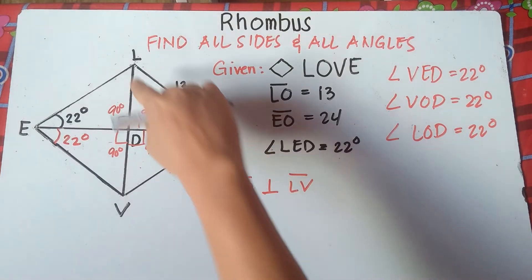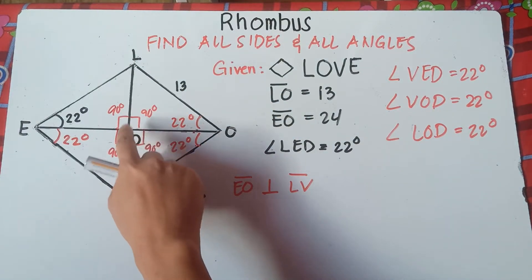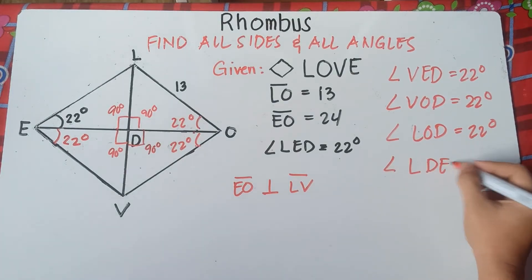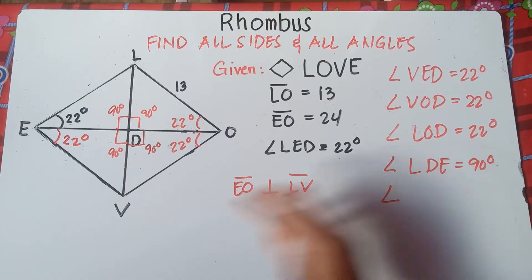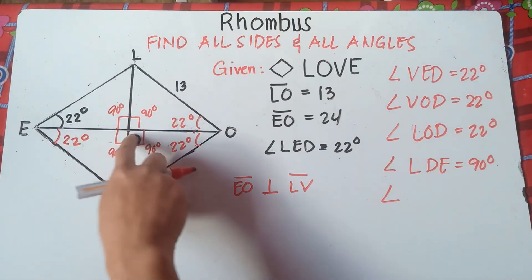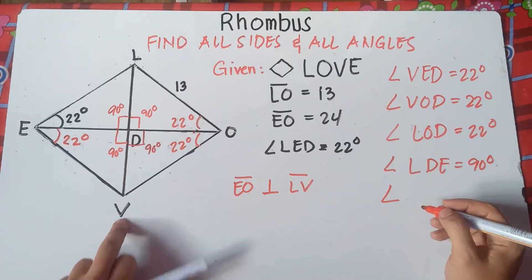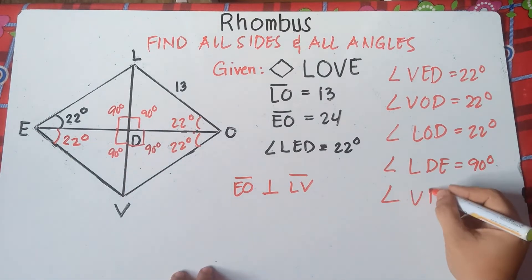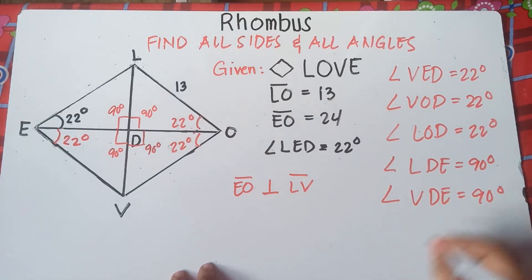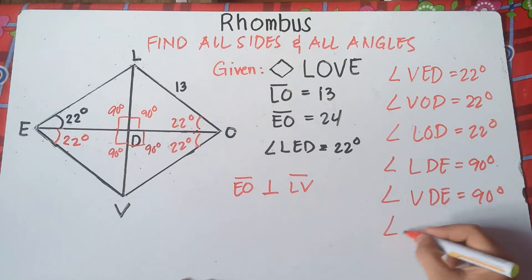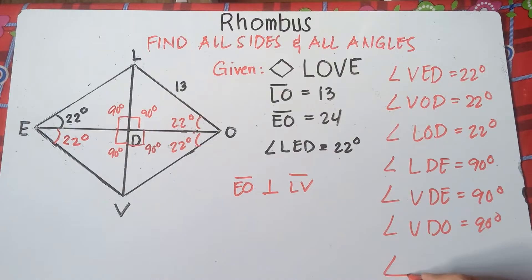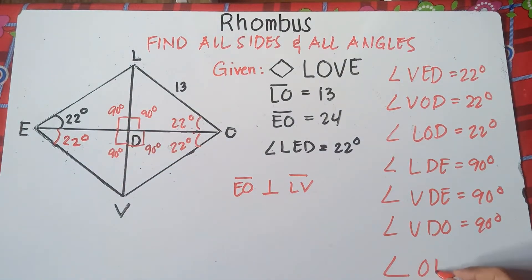So we can say that angle LDE is equals to 90 degrees. Angle VDE is 90 degrees. Angle VDO is equals to 90 degrees. And angle ODL is equals to 90 degrees.